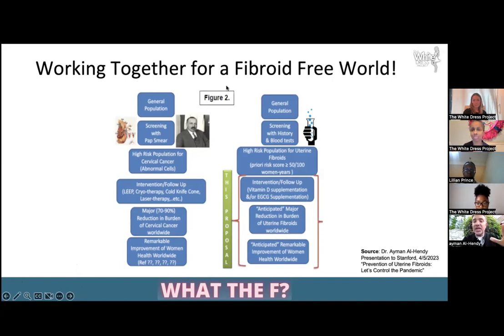If she is at higher risk of developing fibroids, then we can intervene with simple things — vitamin D supplement and green tea supplement — and actually prevent the development of fibroids. That's the concept of primary prevention of fibroids. Again, I want to emphasize we're not there yet, but it's something we're working on at the research level.